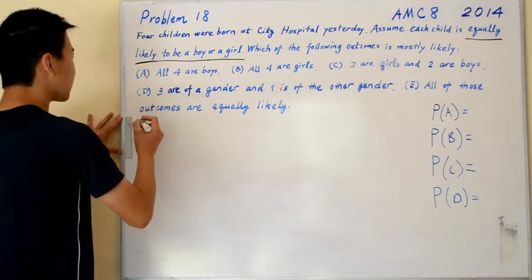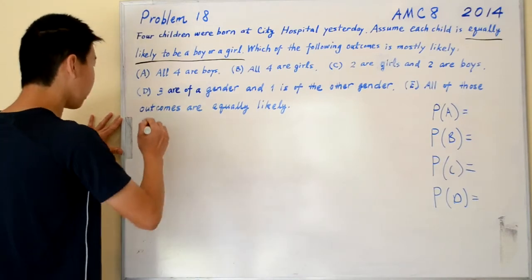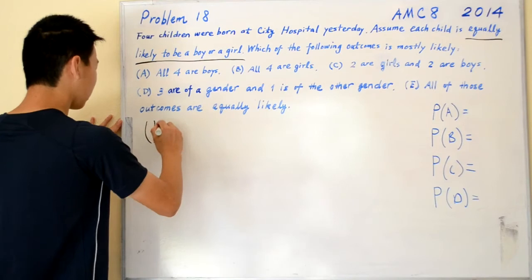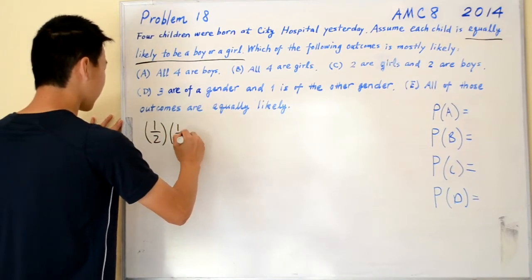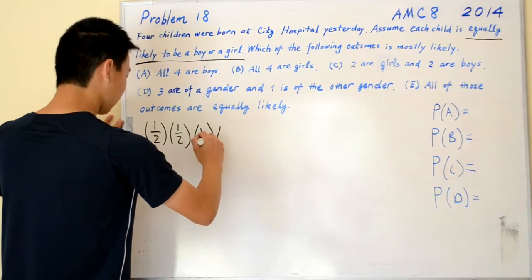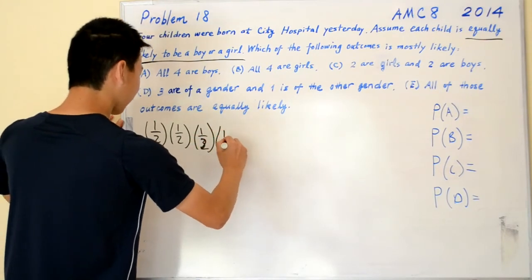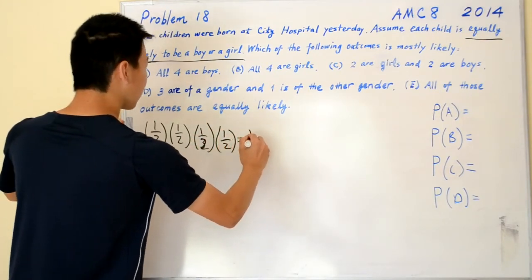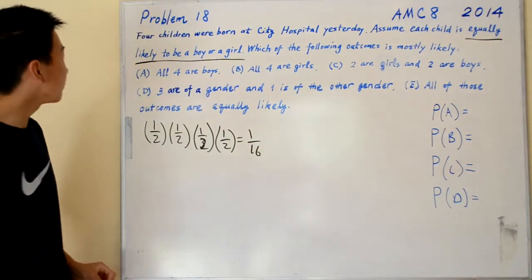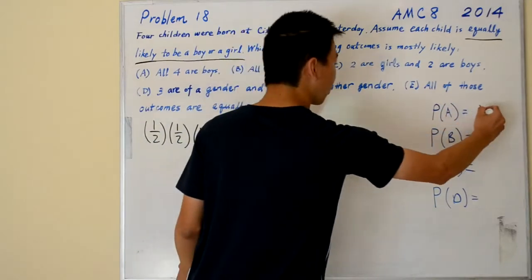Choice A says all four children are boys. So that's just one half for the first child, times one half for the second child, then one half for the third child, and one half for the fourth child. So that means the probability of A is one over sixteen.